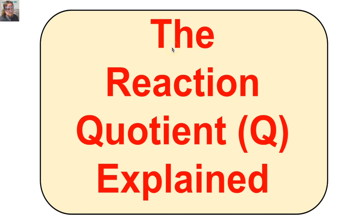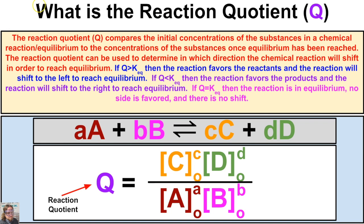Hey, this is Mr. Millings and in this video we are going to learn about the reaction quotient, or Q. We'll learn how to calculate Q and then compare it to our equilibrium constant. The reaction quotient compares the initial concentrations of substances in a chemical reaction to the concentrations once equilibrium has been reached.